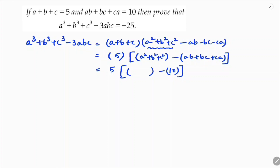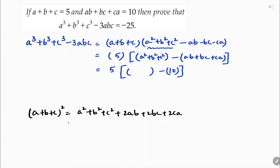To find a square plus b square plus c square, I'll use the identity: a plus b plus c whole square equals a square plus b square plus c square plus 2ab plus 2bc plus 2ca, which can be rewritten as a square plus b square plus c square plus 2 times ab plus bc plus ca.